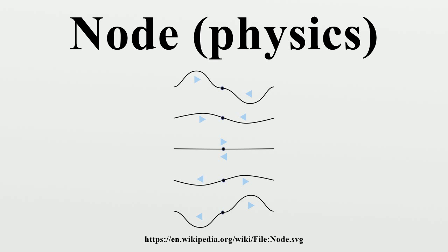In cases where the two opposite wave trains are not at the same amplitude, they do not cancel perfectly, so the amplitude of the standing wave at the nodes is not zero but merely a minimum. This occurs when the reflection at the boundary is imperfect. This is indicated by a finite standing wave ratio — the ratio of the amplitude of the wave at the anti-node to the amplitude at the node.